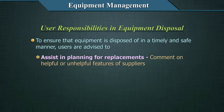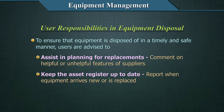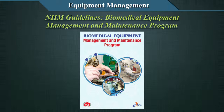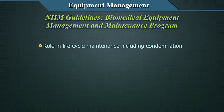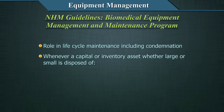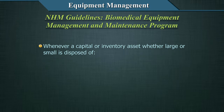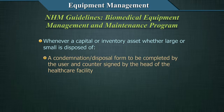Users should also assist in planning for replacements, comment on helpful or unhelpful features of suppliers, and keep the asset register up to date, reporting when equipment arrives new or is replaced. Local regulations are important — NHM guidelines for Biomedical Equipment Management and Maintenance Program are available at www.nhsrc.com. Whenever a capital or inventory asset is disposed of, a condemnation or disposal form should be completed by the user and countersigned by the head of the healthcare facility.